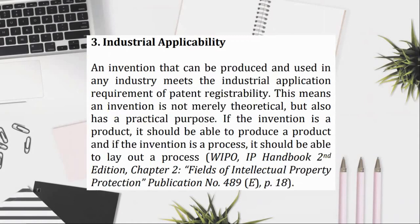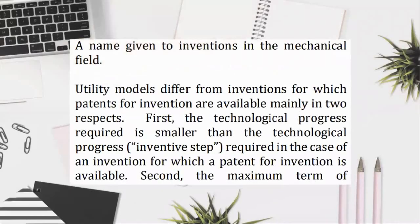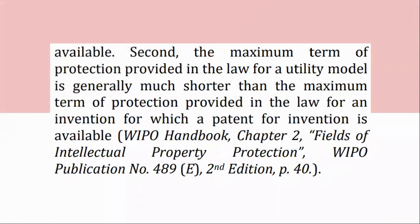(B) Utility Model: a name given to inventions in the mechanical field. Utility models differ from inventions for which patents for invention are available mainly in two respects. First, the technological progress required (inventive step) is smaller than that required for a patent for invention. Second, the maximum term of protection provided in the law for a utility model is generally much shorter than the maximum term of protection for a patent for invention. WIPO Handbook, Chapter 2, Fields of Intellectual Property Protection, WIPO Publication No. 489(E), 2nd Edition, p. 40.